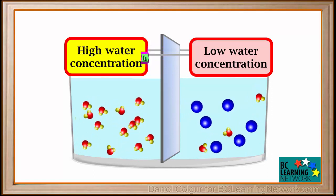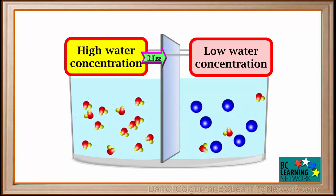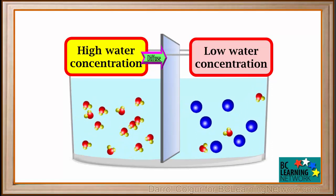Water molecules are small enough to pass through this barrier. And we know that water will diffuse through a barrier from an area of high concentration to an area of lower concentration. So in this case, it will diffuse toward the right chamber.